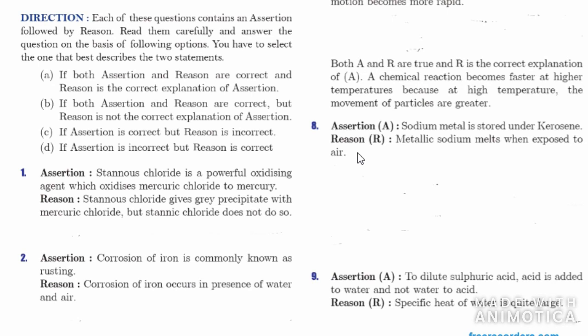Now for assertion-reason questions. First: assertion — stannous chloride is a powerful oxidizing agent which oxidizes mercuric chloride to mercury. Reason — stannous chloride gives a grey precipitate with mercuric chloride but stannic chloride does not. The assertion is correct — it is a strong oxidizing agent — but the reason is incorrect. Therefore the right option is C.